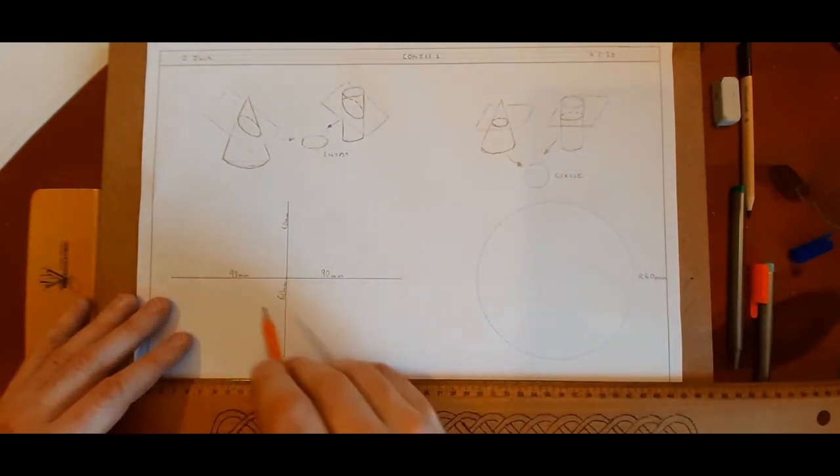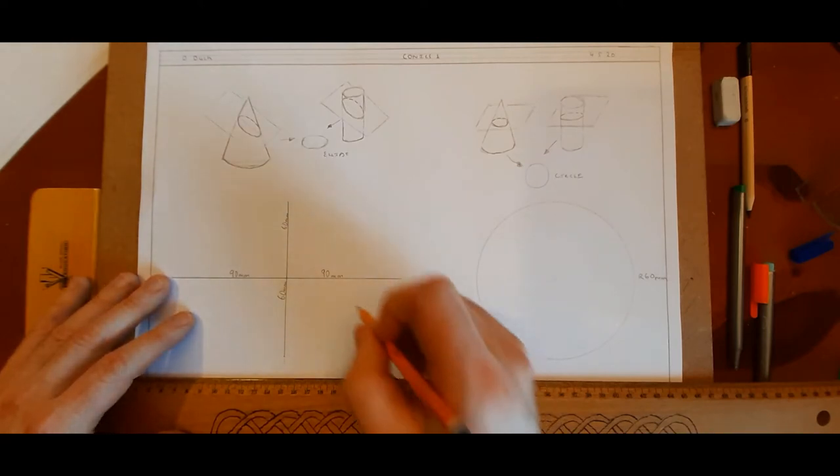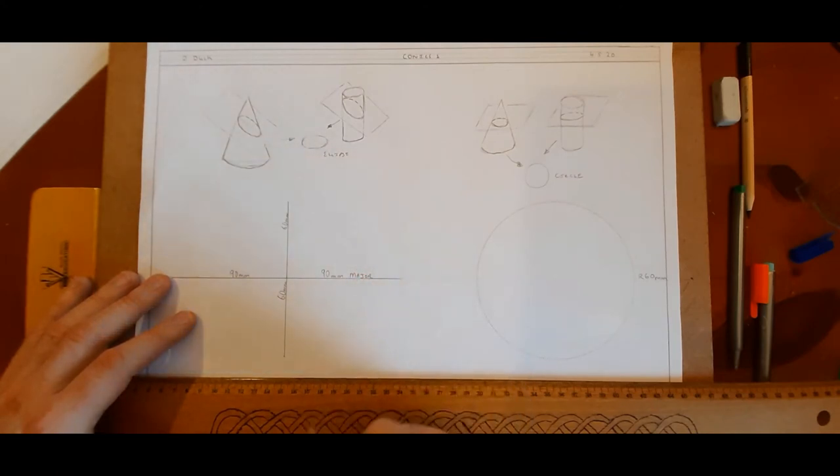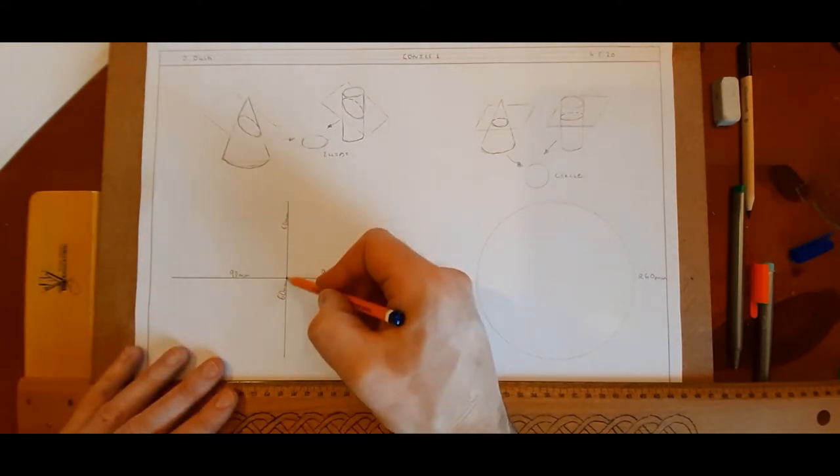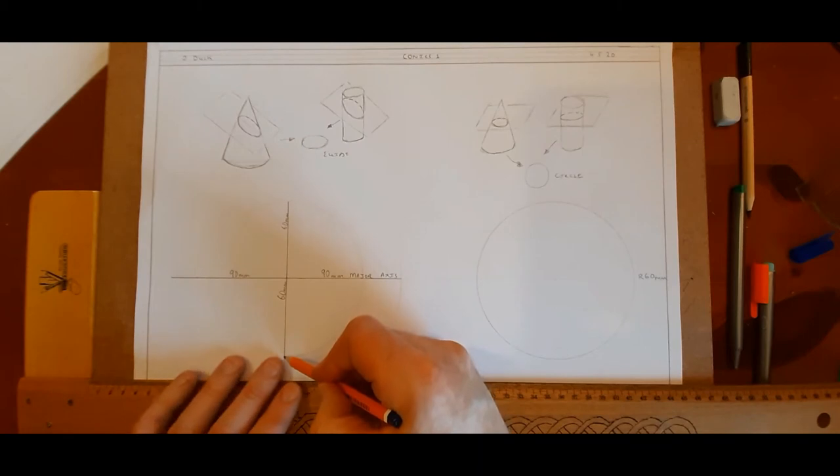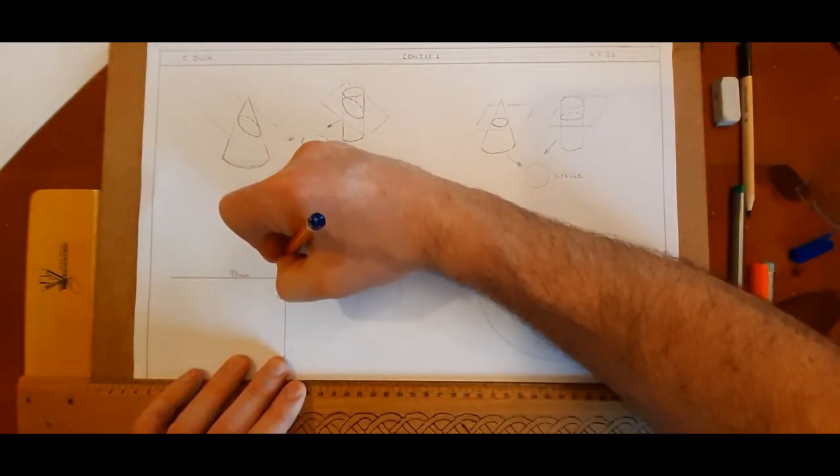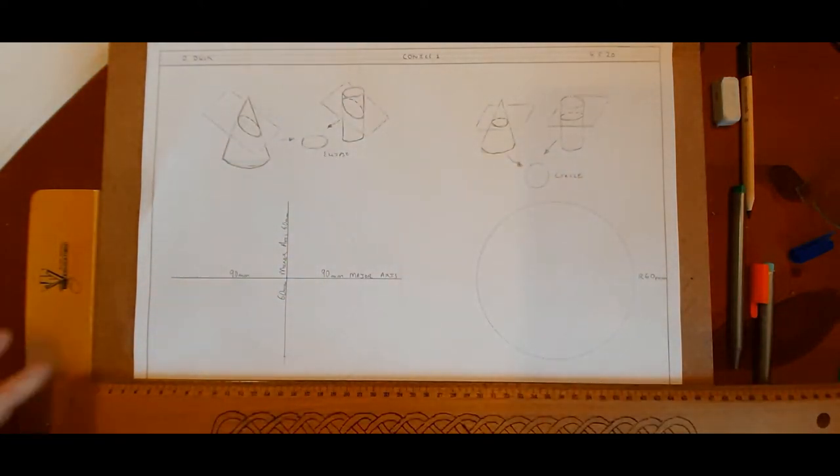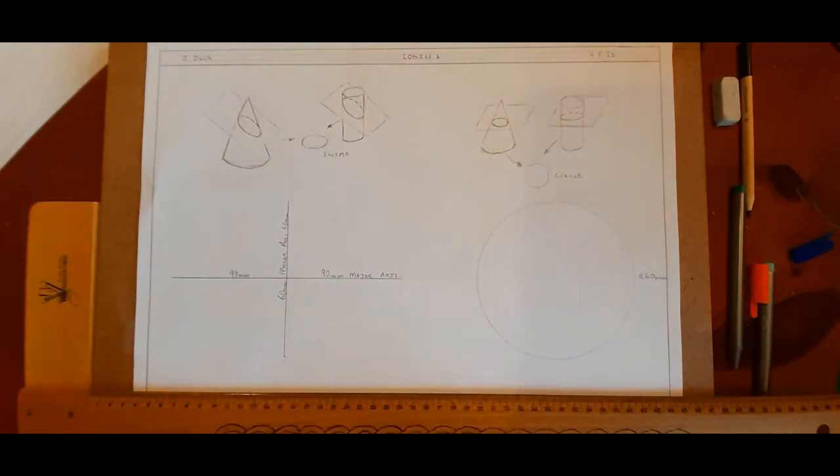Over here I have two lines. The big line is 180 mil long, that's 90 plus 90, and that's called the major axis. This guy is 60 from here to here and 60, which is 120, and this is called the minor. Now when you draw these two lines, the next thing we're going to do is draw two circles.